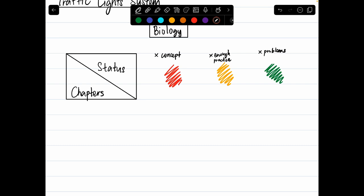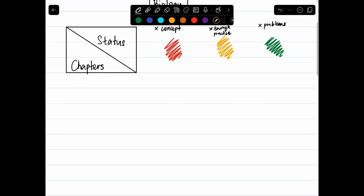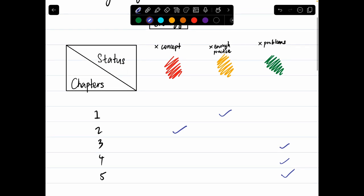These three distinct categories allow you to get a good understanding of where you are at in a particular subject. So for biology, for instance, we have chapters one, two, three, four, five randomly. And then for an example, you are at this level for chapter one, at this level for chapter two, and then for the rest of the chapters you are at the green status.